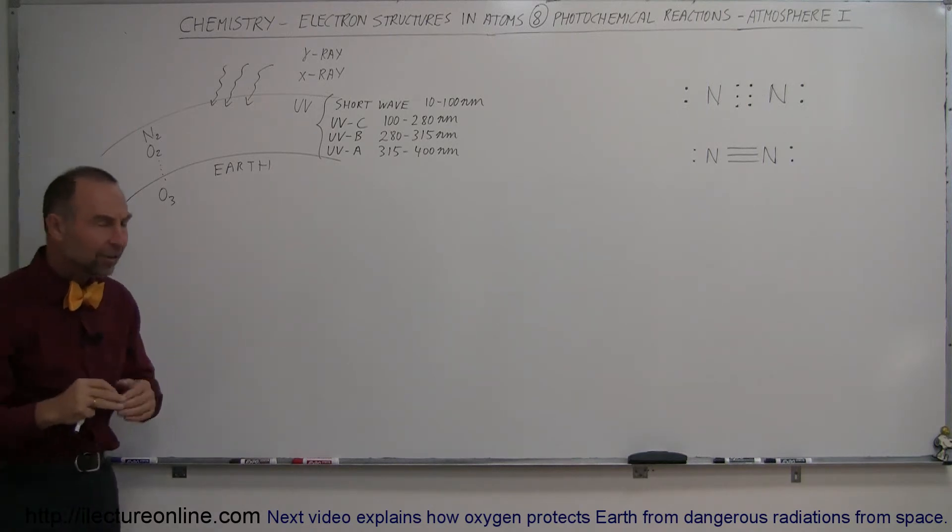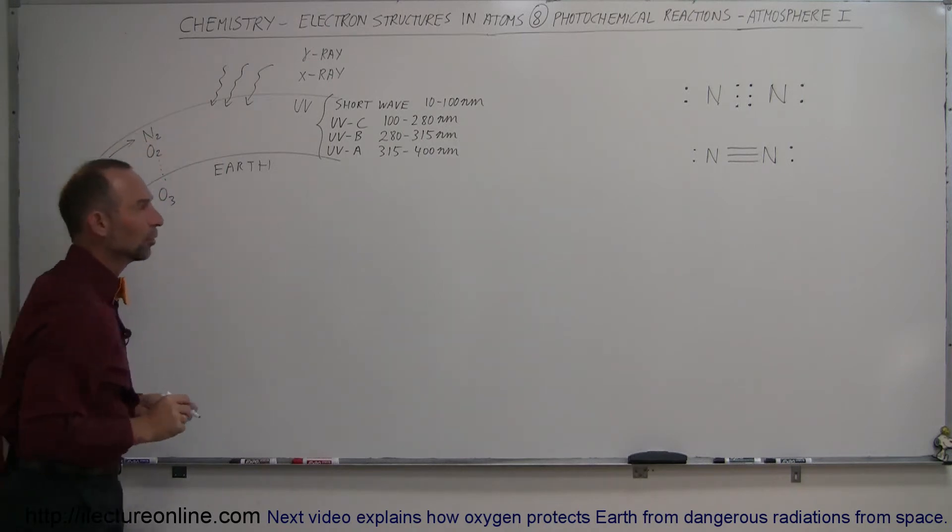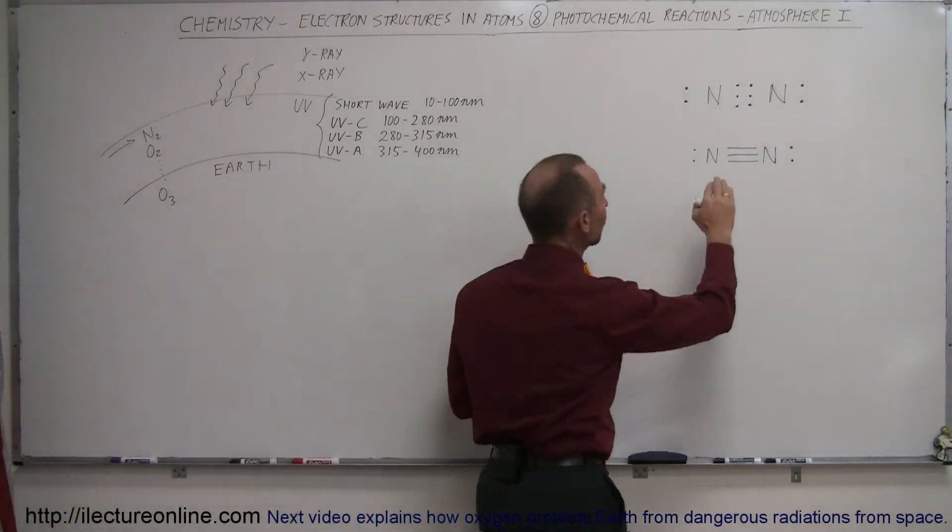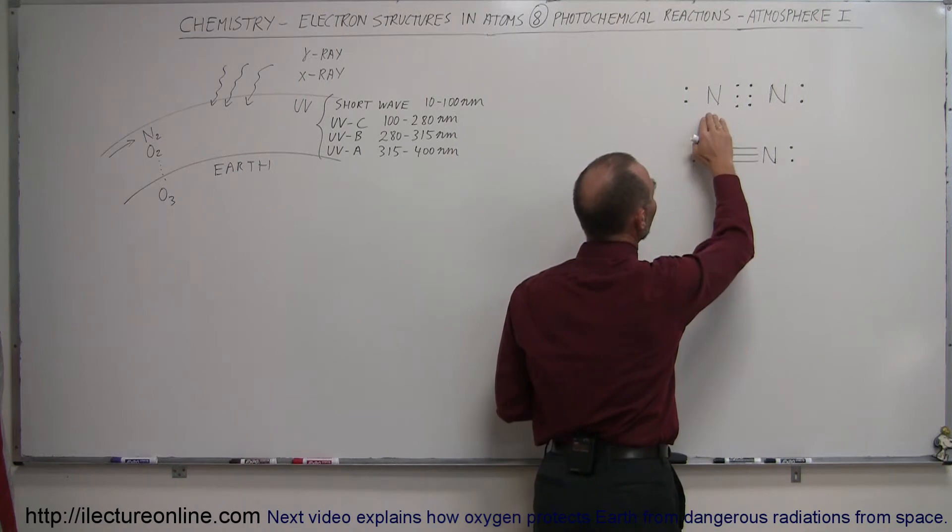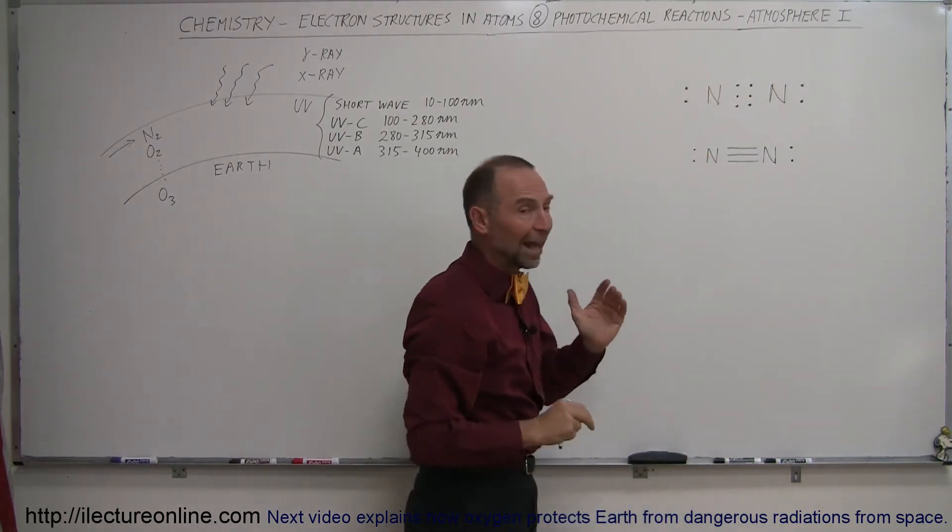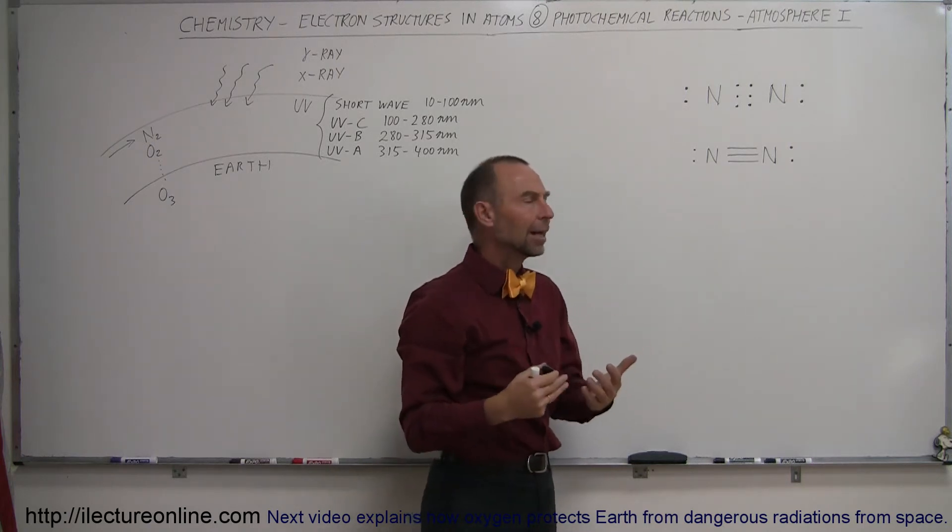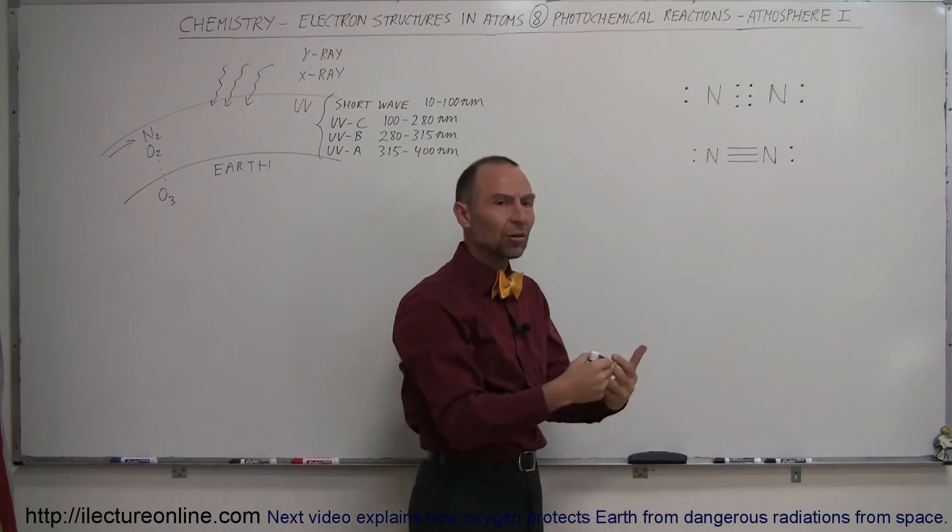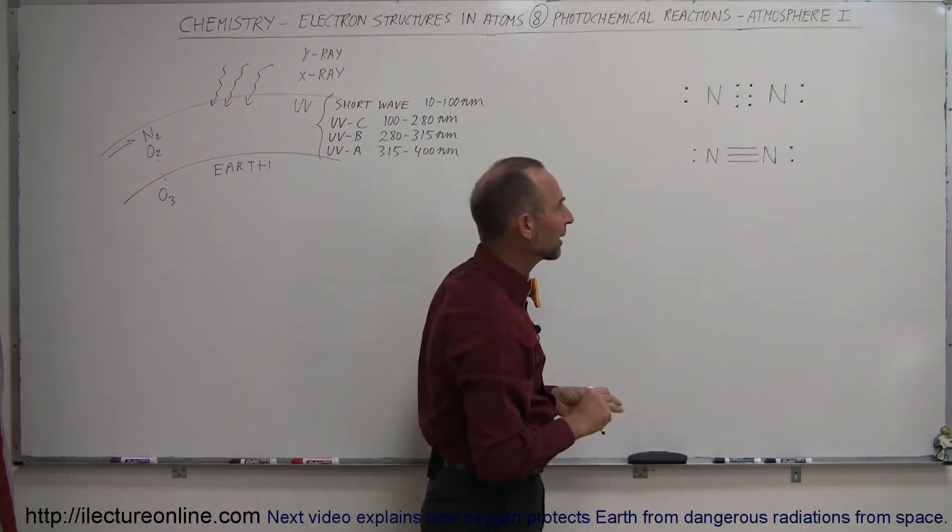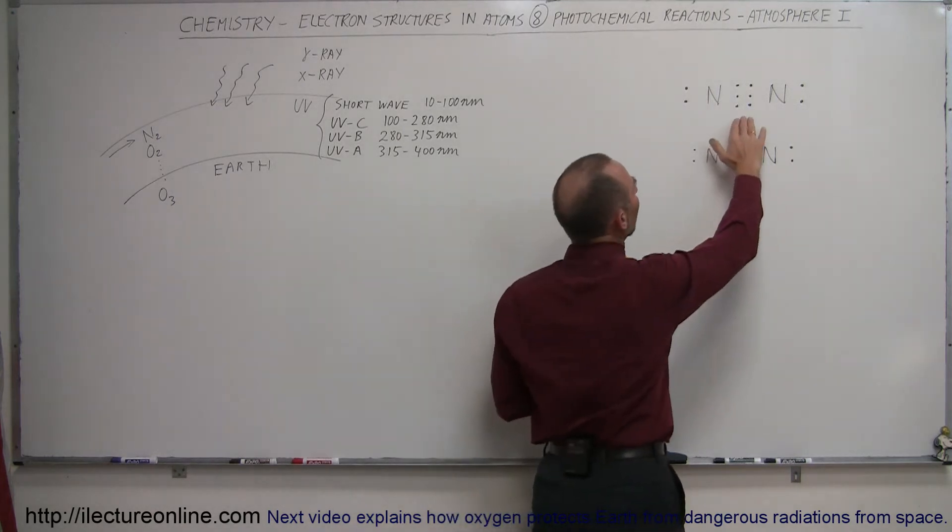The first line of defense in our atmosphere is the nitrogen molecule. Here we have a picture of it, the diatomic molecule. Because of the way the electrons are arranged around nitrogen, each nitrogen atom only has five valence electrons. All atoms like to have eight valence electrons, at least atoms of that part of the periodic table. They like to have eight valence electrons in the outer energy level.